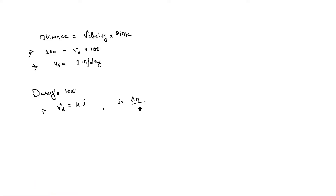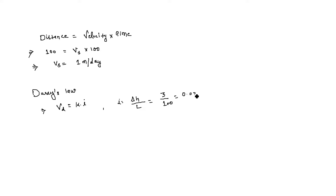The hydraulic gradient is Δh divided by L. The head difference Δh is 3 meters and the length L is 100 meters, so the hydraulic gradient i equals 3/100 = 0.03.